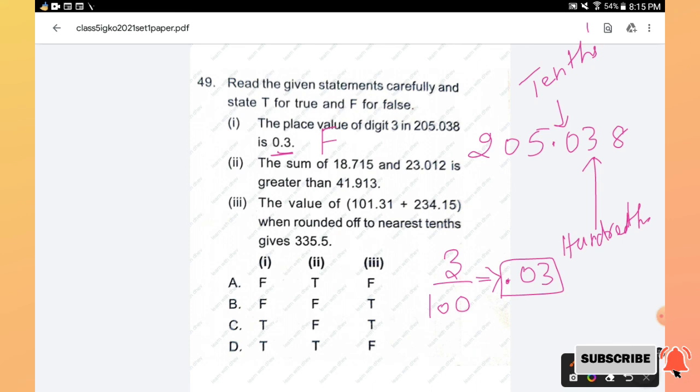Then the sum of two decimal numbers 18.715 and 23.012 is greater than 41.913. First we will add the two decimal numbers, you will get 41.727. So it is not greater than 41.913, so this statement is also false.